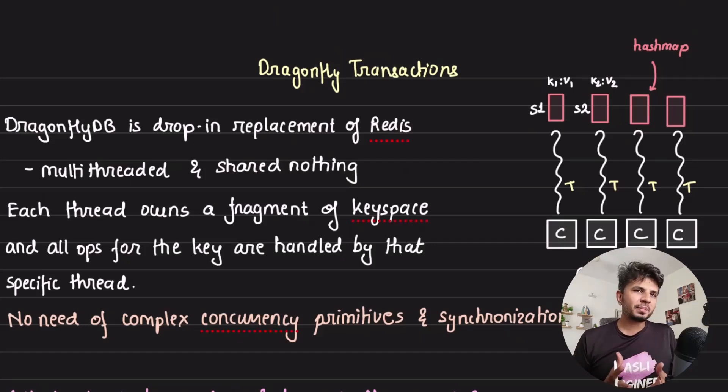DragonflyDB is a drop-in replacement of Redis that offers 25 times the throughput. Given that it is a multi-threaded implementation, it has a very different and interesting way of implementing transactions. This is the second video of the series. Let's start with a very quick overview of Dragonfly.